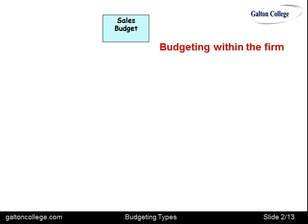The sales budget is simply an account of what the company expects to sell, specifying likely sales.